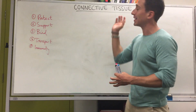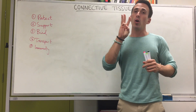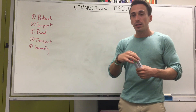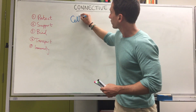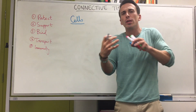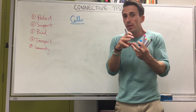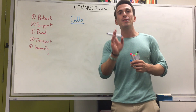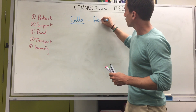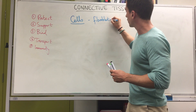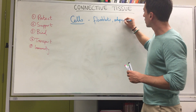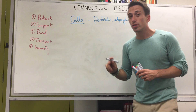Let's talk about the general characteristics of connective tissue. There are three particular things that all different types of connective tissue have in common. The first is cells — all connective tissues have a particular cell type or number of cell types present within them. The most common cell types include fibroblasts, adipocytes, chondrocytes, and osteocytes.